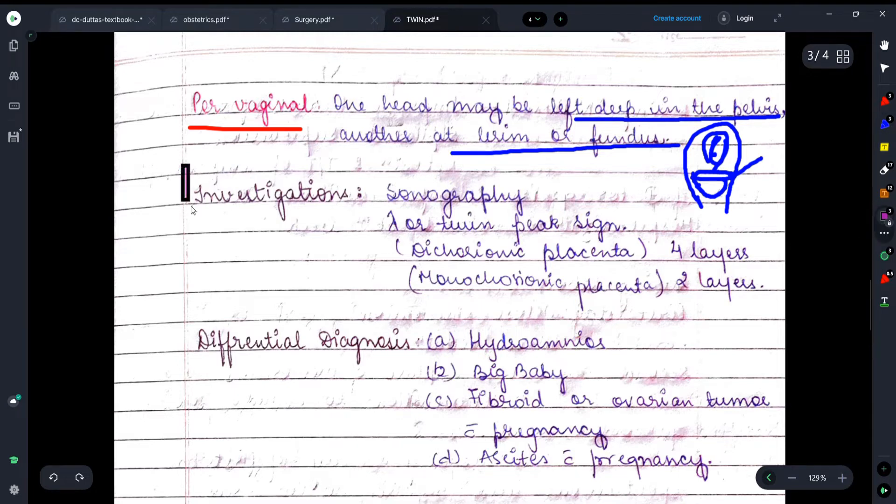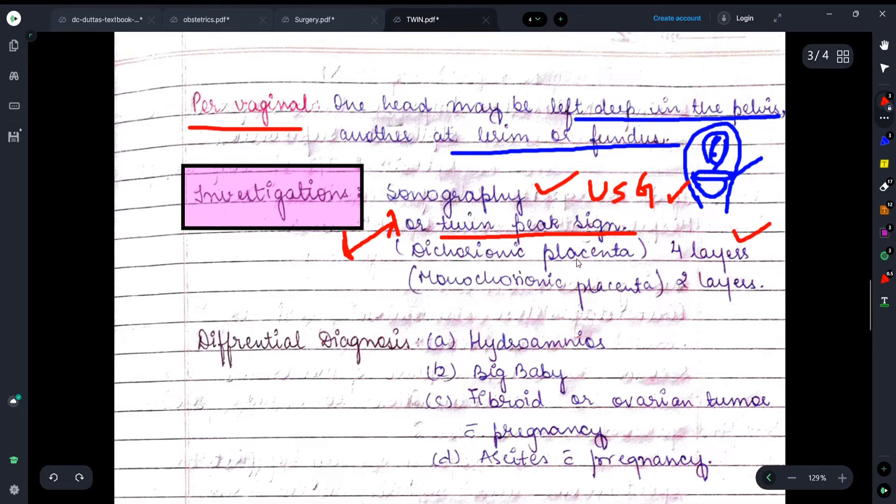Now moving on, let's talk about the investigations. First of all, it has been mentioned about sonography. We will do USG of the female and from that we will know about twin pregnancy. Lambda or twin peak sign is seen. This is very important, friends. Lambda sign in which case is observed? This is sometimes asked in examinations. So you will remember that lambda sign can be observed in twin pregnancy. In dichorionic placenta there will be four layers because it's dichorionic - that means two chorions and two amnions. In monochorionic there are only two layers in this placenta.